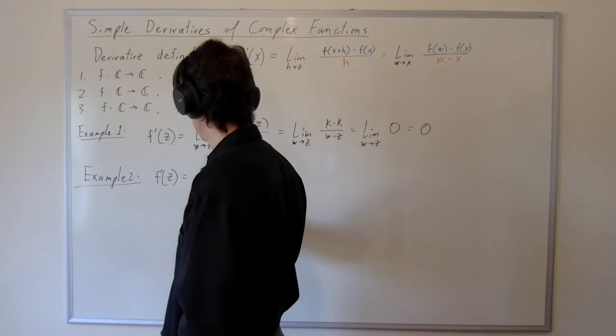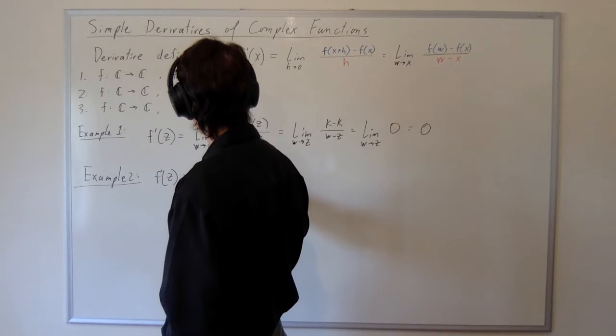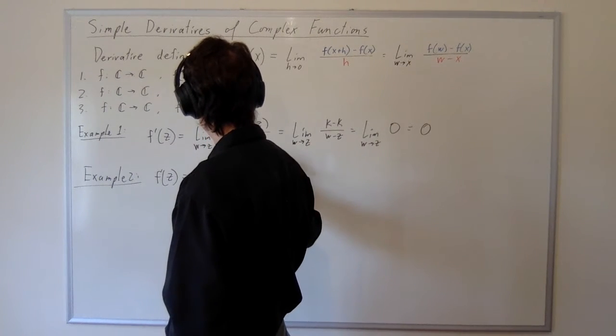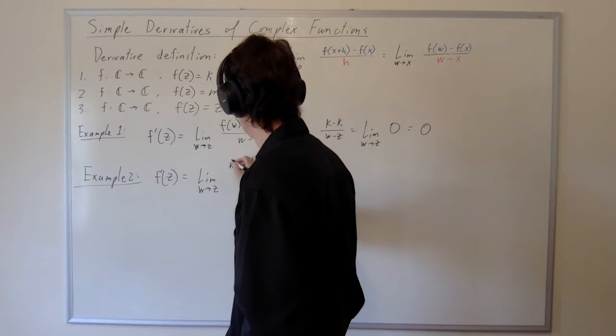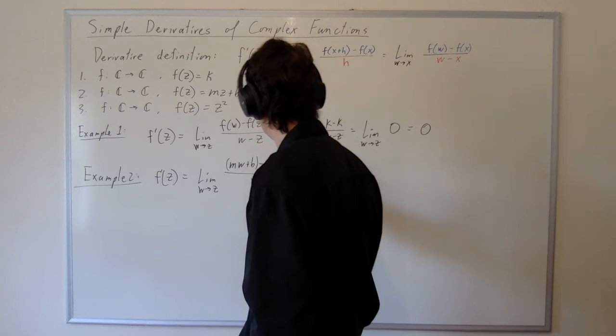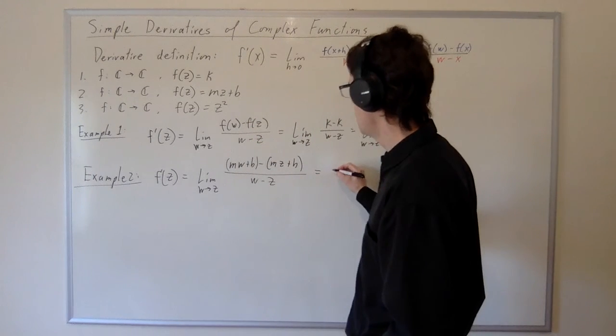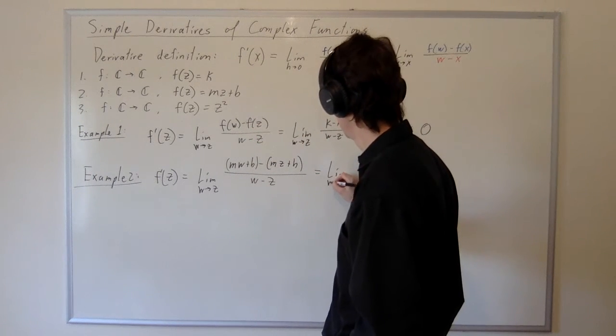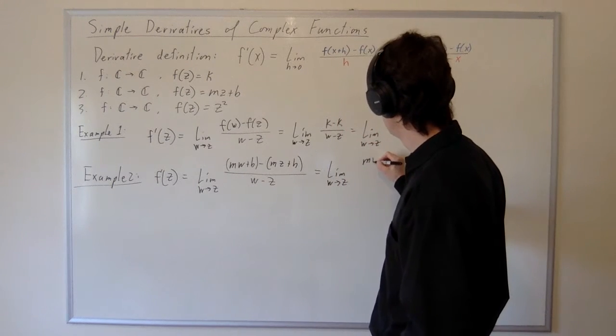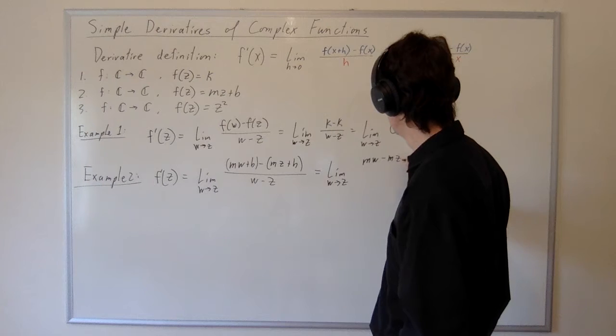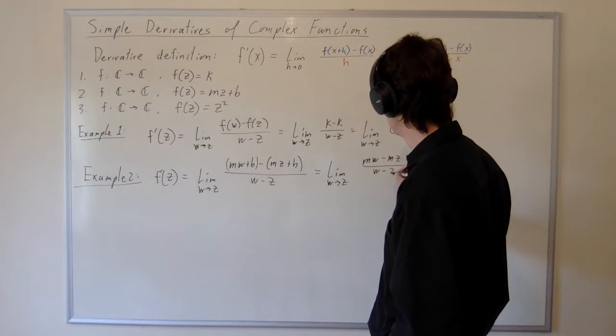So we'll calculate the limit as w approaches z of mw plus b minus mz plus b over w minus z. A little algebra on the top allows us to simplify to the limit as w approaches z of mw minus mz over w minus z.